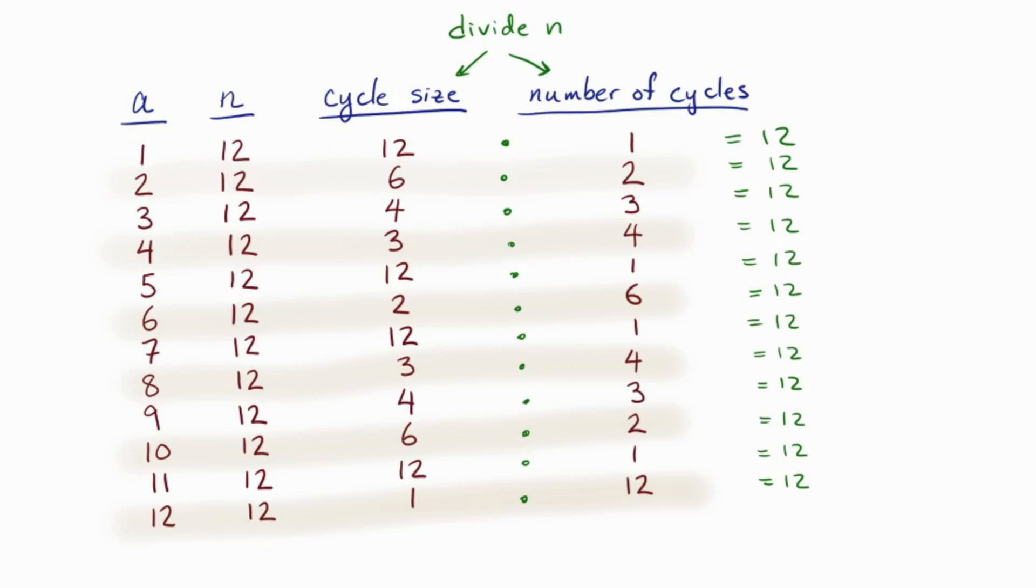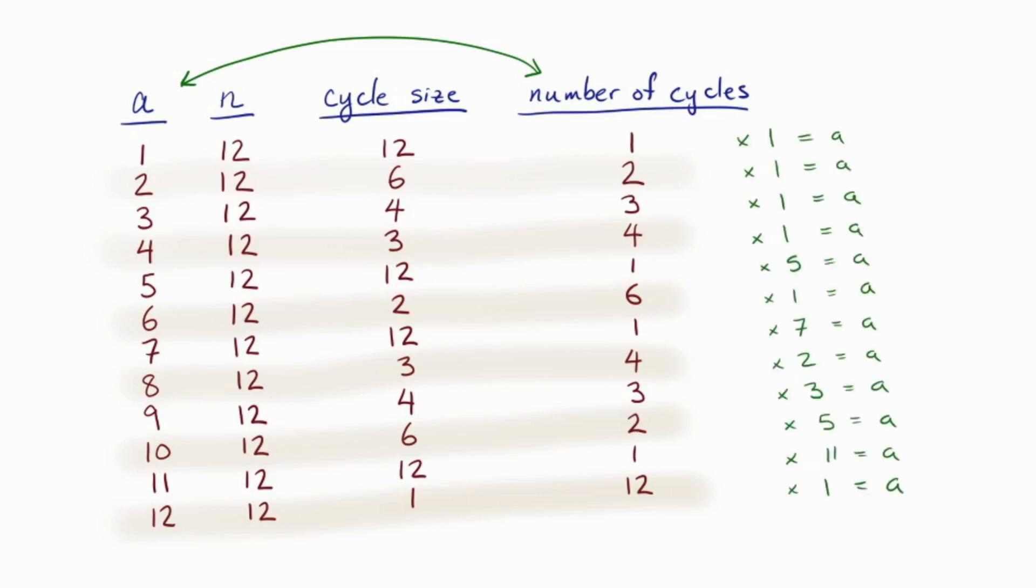Second, you might notice that the number of cycles seems to divide the integer a. This is just an observation, just seems to be true. Sometimes they're equal, sometimes it's a strict divisor. So here's the factor between the two, so you can see it a little more clearly. So take a equals 5, for example, here. 5 doesn't divide 12, and we know the number of cycles has to divide the modulus, so we couldn't actually have 5 cycles. But one divides both a and n, so that works out. So here's what we've observed so far. The number of cycles divides a and n. It divides both of them.